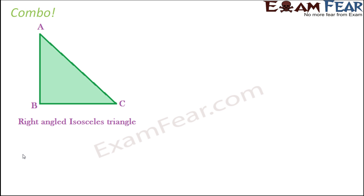Now there could be a combo of these two types of triangles. For example, a right angle triangle can also be an isosceles triangle. Let's take this example — this is a right angle triangle because there is one angle which is equal to 90 degrees.